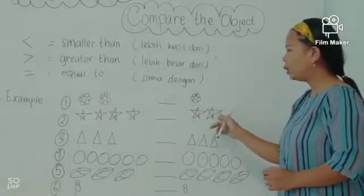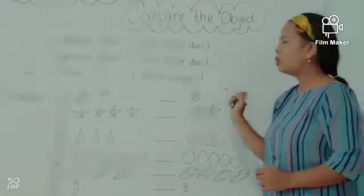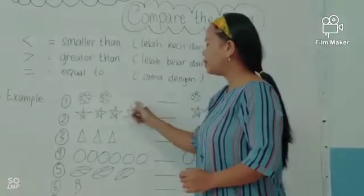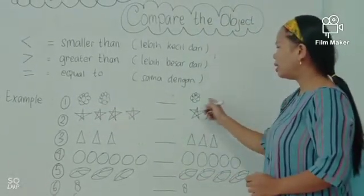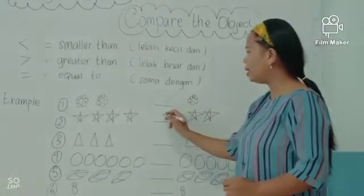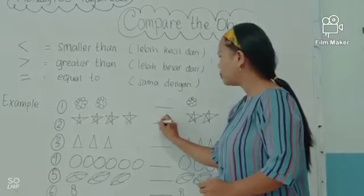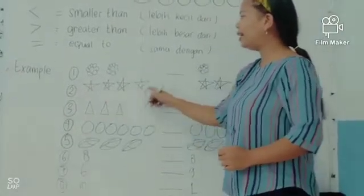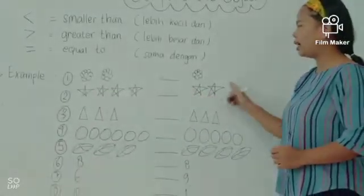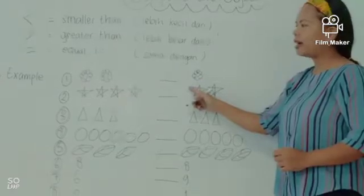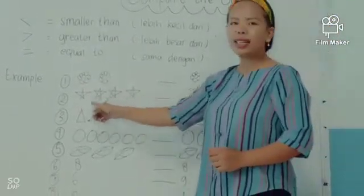We count the stars in the right side: one, two. There are two stars. So the stars in the left side — it's bigger than the stars in the right side. We can make it bigger than. Bintang yang ada di sebelah kiri lebih banyak dari bintang yang ada di sebelah kanan.